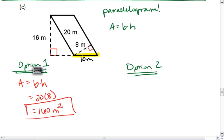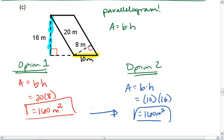We can use the 10 as the base, which means 16 is the height. Thus, for option 2, we get area again as base times height. In this case it's 10 times 16, which is 160 meters squared. We get the same exact thing as we should.